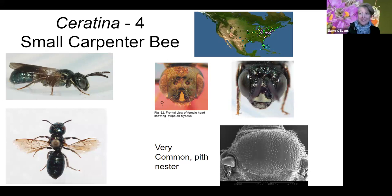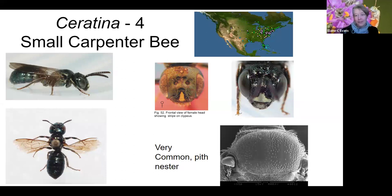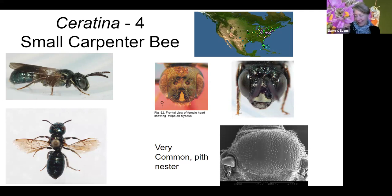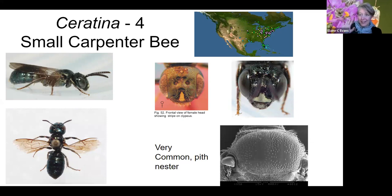Someone asked whether Melissodes on sunflowers are oligolectic — meaning specialist bees dependent on one particular type of plant for all their pollen. Their larvae cannot develop if given pollen from another type of plant. A lot of Melissodes (chap-legged bees) are indeed oligolectic. Some are specialists on a genus rather than a specific species — for example, a species might visit only goldenrods or only sunflower-family plants.